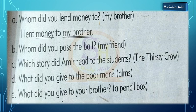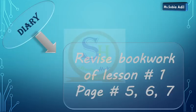I hope students all of the things are clear. If there is still ambiguity, you may ask me. So this is your diary for today — write and revise book work of lesson number one, pages 5, 6 and 7. Thank you very much.